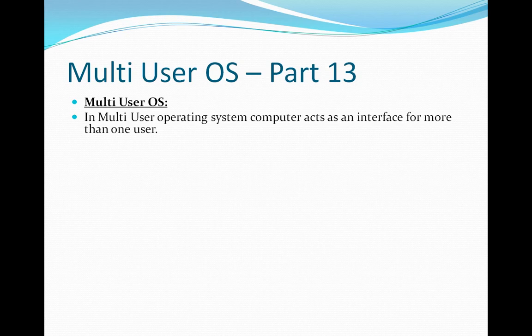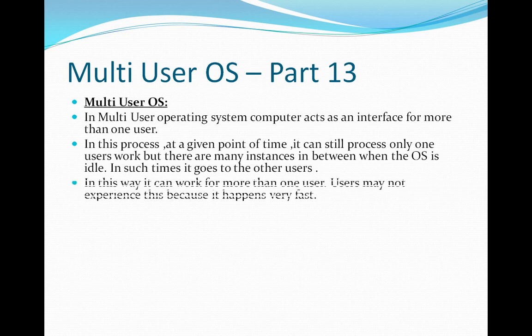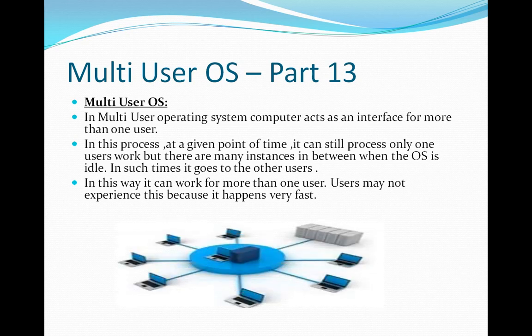In a multi-user operating system, the computer acts as an interface for one or more than one user. At a given point of time it can still process only one task, but there are many instances where the operating system is idle, and in such time it goes to the other user. In this way it can work for more than one user, and the user may not experience this because it happens very fast.